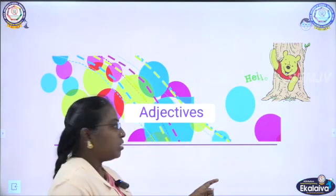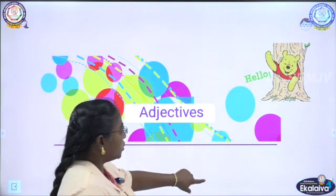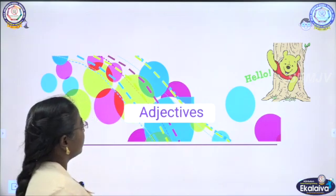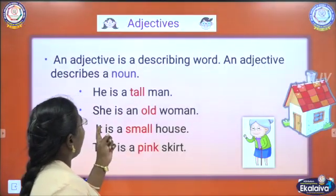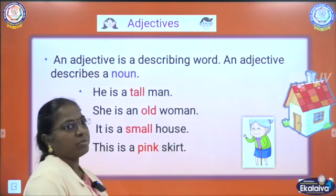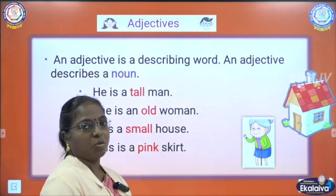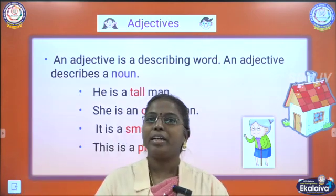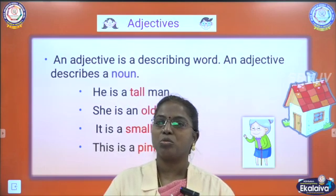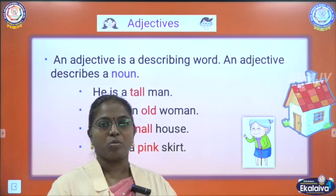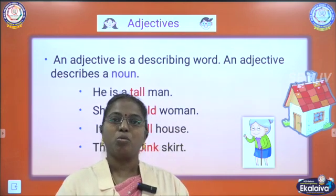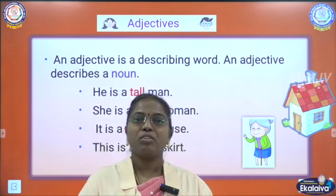What is the topic you are going to see now? Adjectives. An adjective is a describing word. An adjective describes a noun. Noun is nothing but a naming word. And there are different types of noun: abstract noun, collective noun, common noun, proper noun. And adjective is nothing but which describes and qualifies the noun.